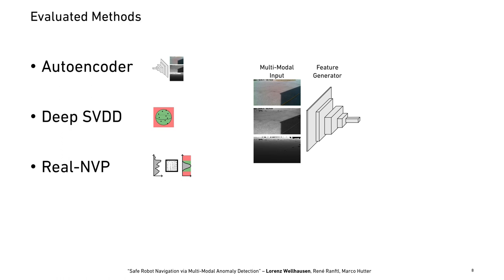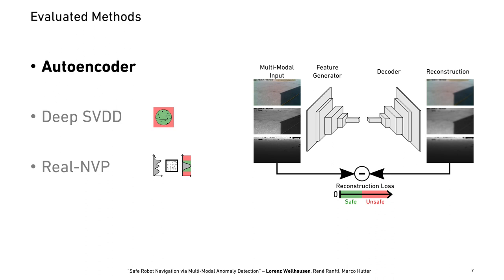The first method is based on an autoencoder, where from the generated features we try to reconstruct the original input images, then compare the reconstruction to the original image and make a decision on novelty based on the quality of reconstruction.